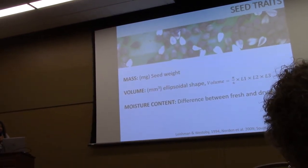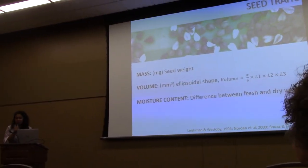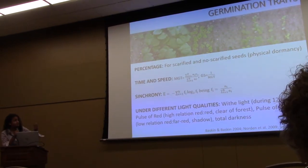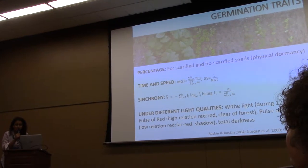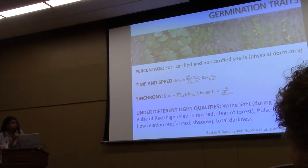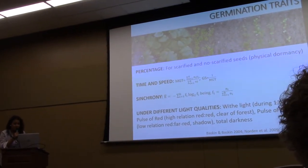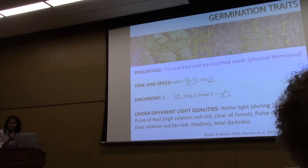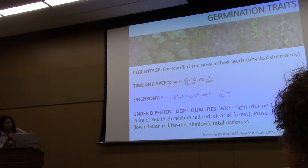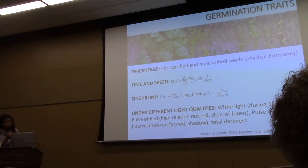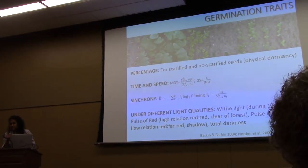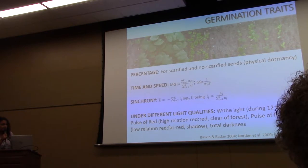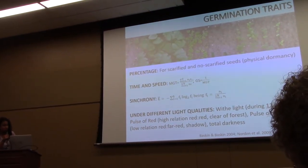The seed traits we measured were seed weight, mass, volume (assuming an ellipsoidal shape), and moisture content as the difference between fresh and dry weight. The germination traits we measured were percentage of germination, physical dormancy testing for all species, time and speed of germination, synchrony, and germination under different light qualities. We had four light treatments: one matching the temperature conditions of the tropical dry forest with white light for 12 hours per day; a pulse of red light with a high red-to-far-red ratio, simulating germination in a forest gap; a pulse of far-red with a low red-to-far-red ratio, simulating germination under shade; and total darkness.